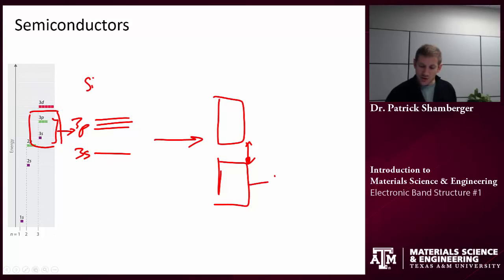In a semiconductor, I would call this the valence band. I would call this the band gap. And oftentimes we abbreviate that E sub G. Band gap. And I would call this the conduction band.